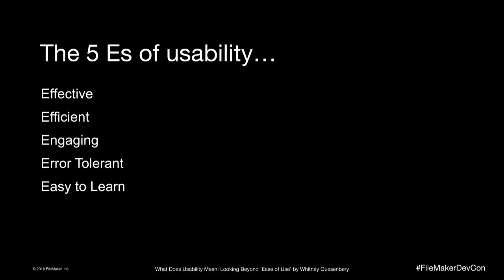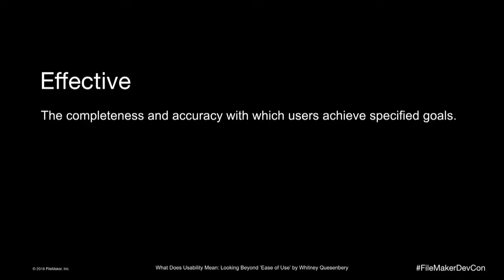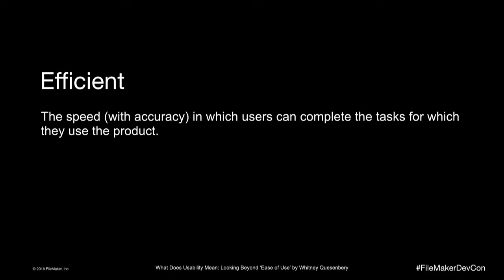These are the five E's of usability that I try to stick to daily. First: effective - the completeness and accuracy with which users can achieve specific goals. Regardless of functionality, when it comes to usability, can I do X? Second: efficient - the speed with which users can complete the tasks for which they use the product. The key bit is speed with accuracy. Speed is useless on its own - paper is fast, but it's not accurate. Efficiency is speed with accuracy.